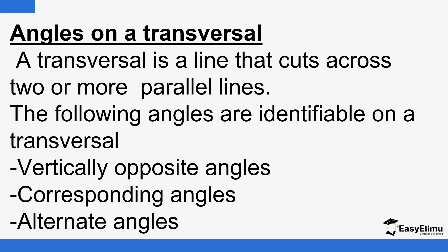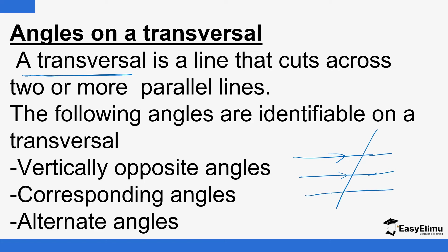What we call a transversal is basically a straight line that cuts across two or more parallel lines. So if you have parallel lines, and then you have a line that cuts across — it could be two or more — so long as we have parallel lines and then we have a line cutting across them, then such a line is called a transversal.